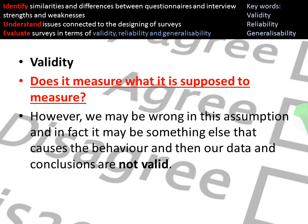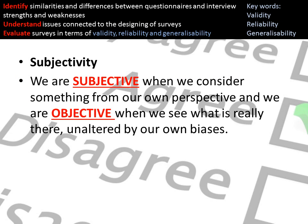If we're asking a question about obedience but start asking whether they know how to tie their shoes, that's obviously not a valid question. Subjectivity is where something may be influenced by the researcher and their perspective; objectivity is when something is unaltered by any biases. It's much more scientific.